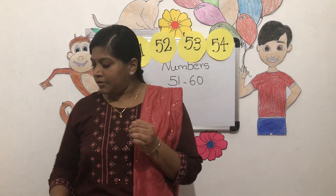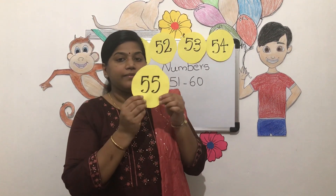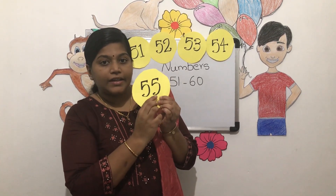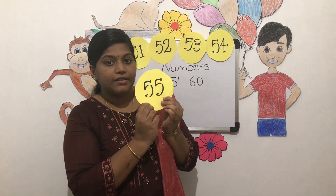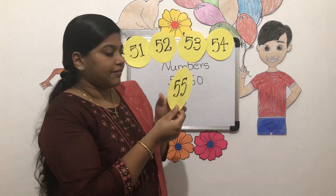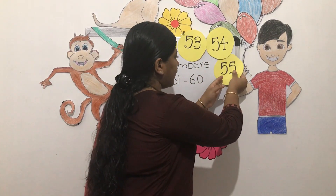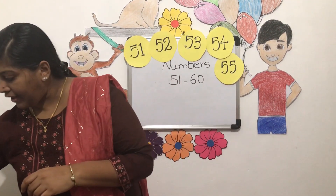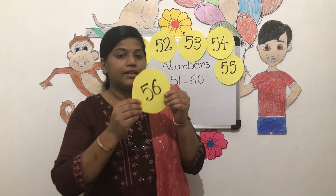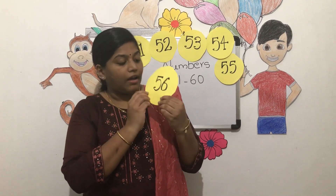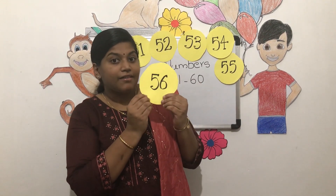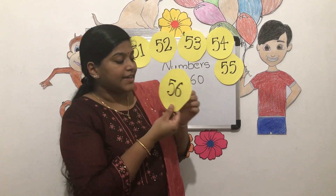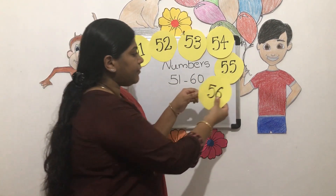Now what is the next number, children? It is 5 5 — 55. Very good. After 55 we have the next number — that is 5 6. What is the number? 56. 5 6, 56.